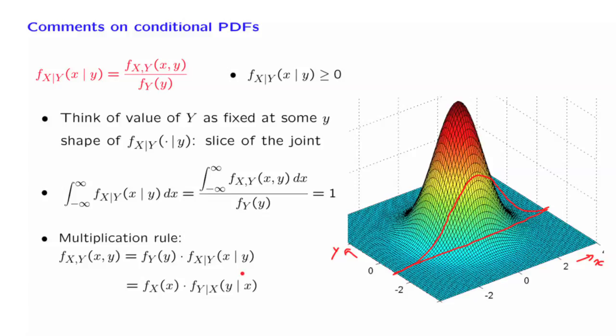By symmetry, a similar formula must also be true when we interchange the roles of x and y. So, algebraically, everything is similar to what we have seen for the case of discrete random variables. It's the same form of the multiplication rule, although the interpretation is a bit different because densities are not probabilities.